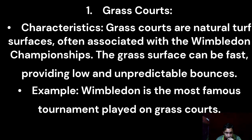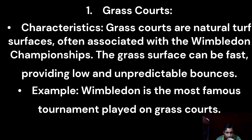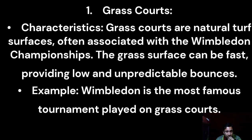The final type is the carpet court. Carpet courts are made of various materials including textile or polyurethane surfaces. They can be fast or slow depending on the specific type of carpet used. Carpet courts have become very less common in professional tennis and many tournaments have transitioned to other surfaces. Each type of court presents unique challenges and can influence the playing style of players.